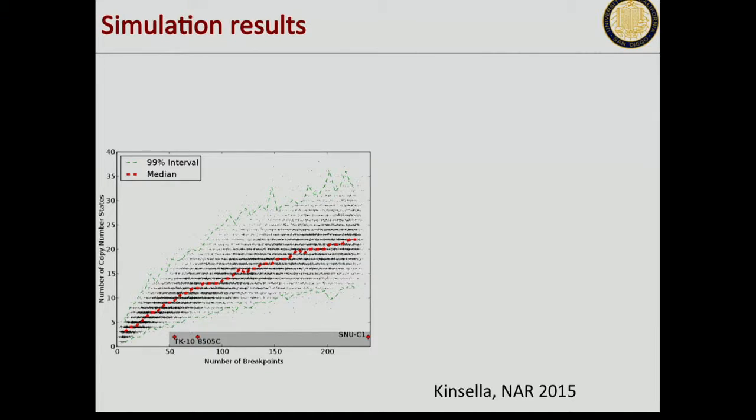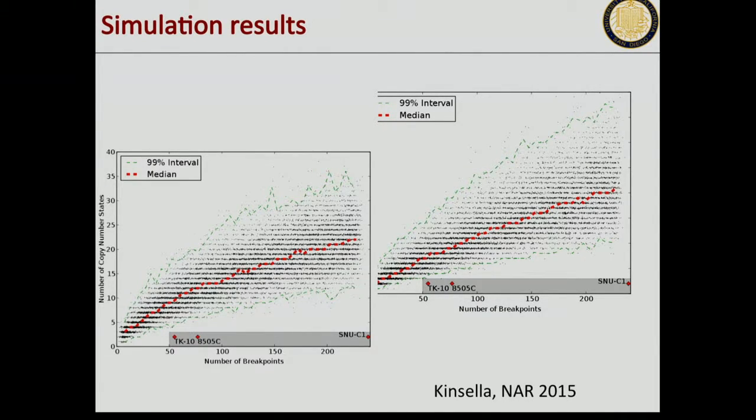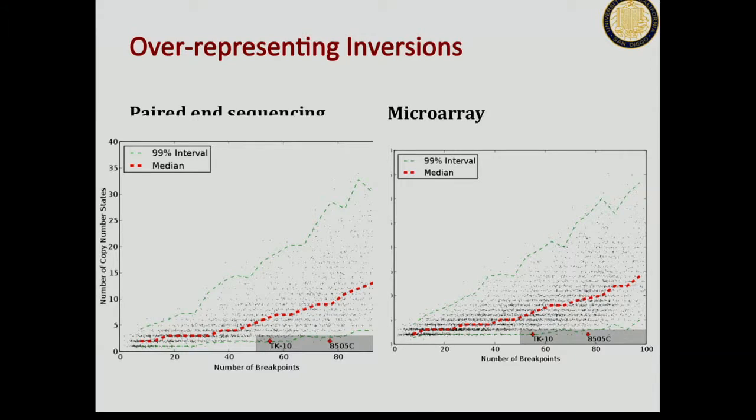There are many issues with this. You have to poke holes, not to say chromothripsis doesn't exist, but if you're going to find it algorithmically, you have to be more cautious. The first thing is we found some errors in their code, and they recognized that later in a subsequent paper. That bends this curve a little bit. The other things are obvious: if you take a looser definition of breakpoints, the curve begins to bend more towards these examples. We took things common in microarray and paired-end sequencing. These are minor things.